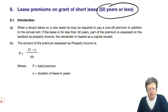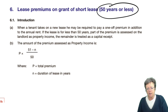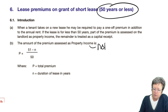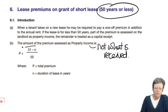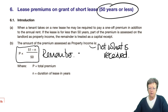So when a tenant takes on a new lease, he may be required to pay a one-off premium in addition to rents. If the lease is less than 50 years, part of it is assessed on the landlord. The amount that is assessed as property income on the landlord is not what he receives. This formula — you have to remember this — is what is needed.